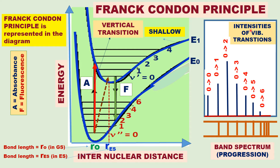The intensities of vibrational electronic transitions are shown here. This is the vibrational electronic spectrum — the band spectrum — and the pattern for vibrational electronic transitions is called progressions. The bands are crowded, the lines are crowded, when the vibrational quantum number is larger.